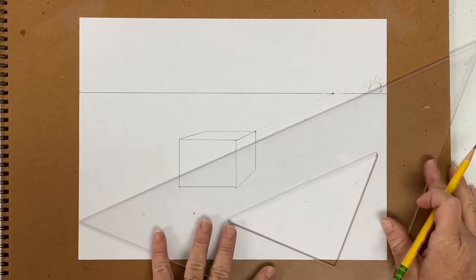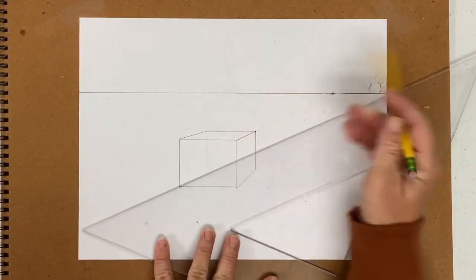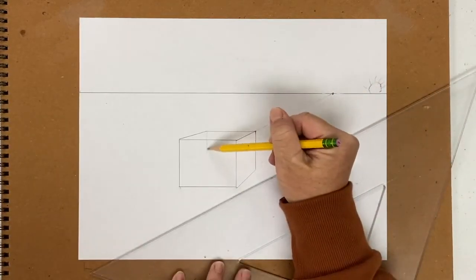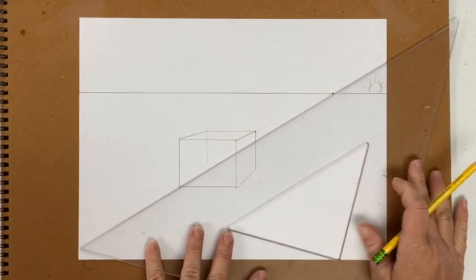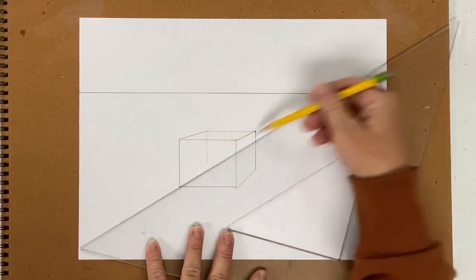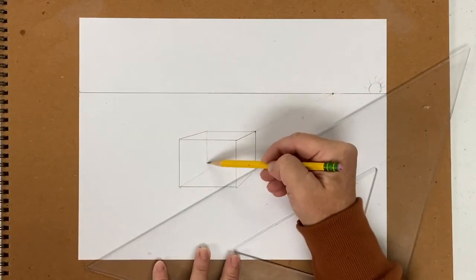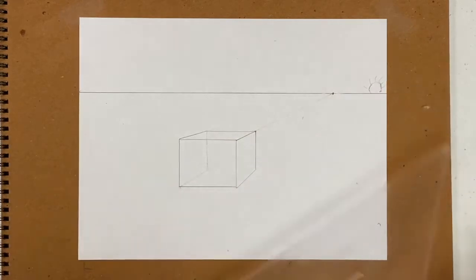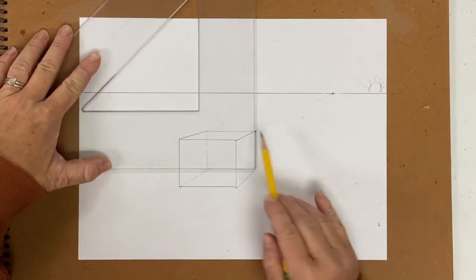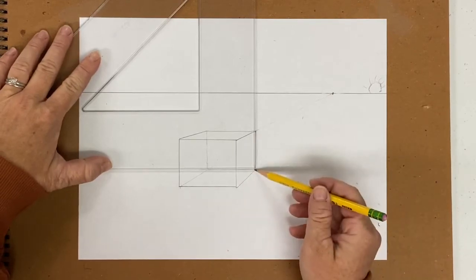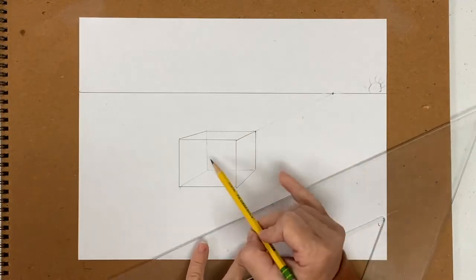So what we're gonna do is we're gonna try to imagine where this back corner is. So if we pulled another vertical line right back here and then we drew our back edge from here, I'm gonna draw very lightly. To determine where this cast shadow is, we need to know where that back corner is so that we can do the next part.